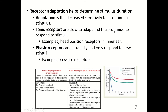Receptor adaptation helps determine stimulus duration. Adaptation is the decreased sensitivity to a continuous stimulus. There are tonic receptors and phasic receptors. Tonic receptors are slow to adapt and thus continue to respond to stimuli — examples are the head position receptors in the inner ear. Phasic receptors adapt rapidly and only respond to new stimuli — an example is pressure receptors.